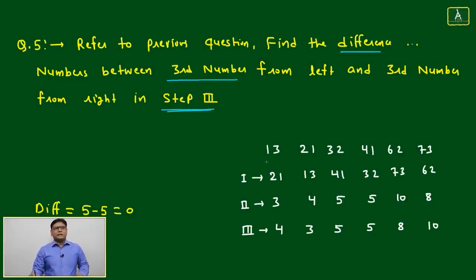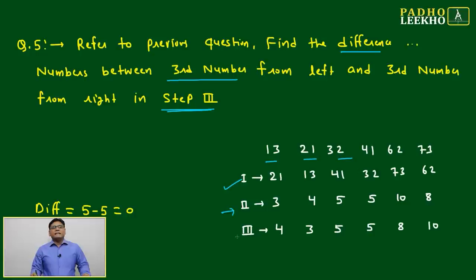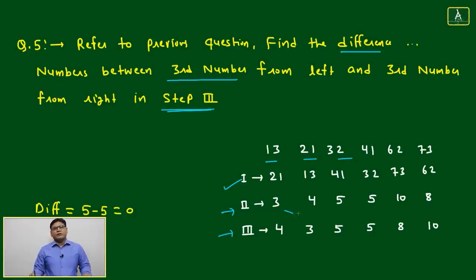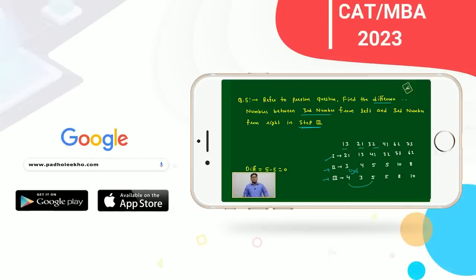Using the data from the previous question — input 13, 21... — Step 1 is obtained by interchanging positions, Step 2 by sum of digits, and Step 3 by interchanging again. In Step 3, the third number from the left is 5 and the third number from the right is also 5, so the difference is 0.